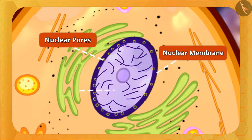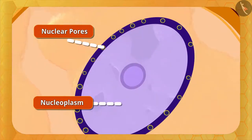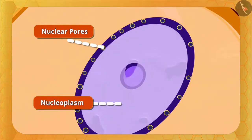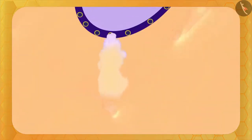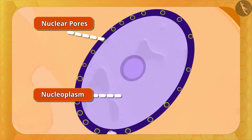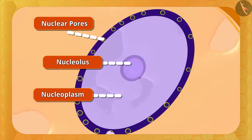You can also notice many small holes in its layer — these are called nuclear pores. Inside the nucleus there is a jelly-like fluid called nucleoplasm. Nuclear pores allow the passage of nucleoplasm into the cytoplasm. Together, the nucleus and cytoplasm are called protoplasm. There is also a spherical part in the center of the nucleus called the nucleolus.